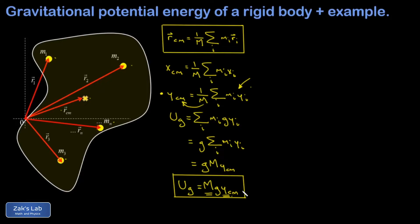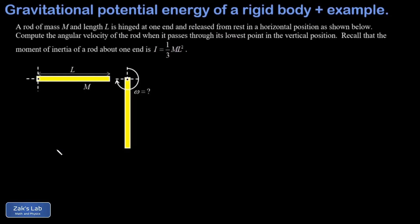So let's apply our new formula for gravitational potential energy to a quick example. In this example we have a rod of mass M and length L. So we're being very general here. The rod is hinged at one end and released from rest in the horizontal position.